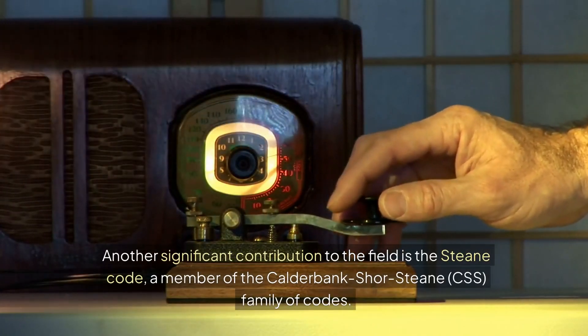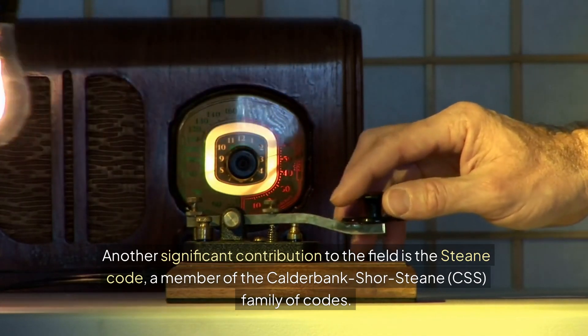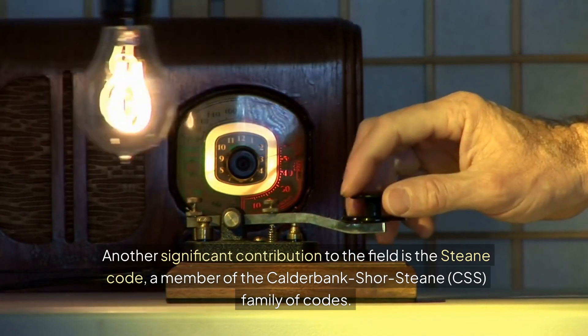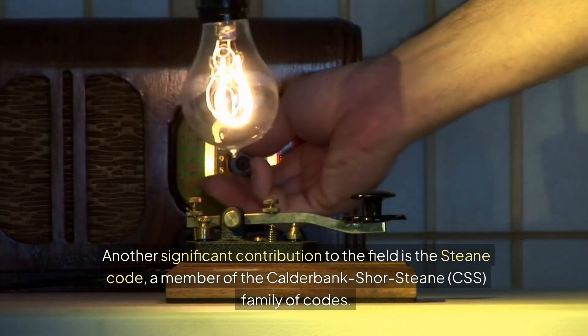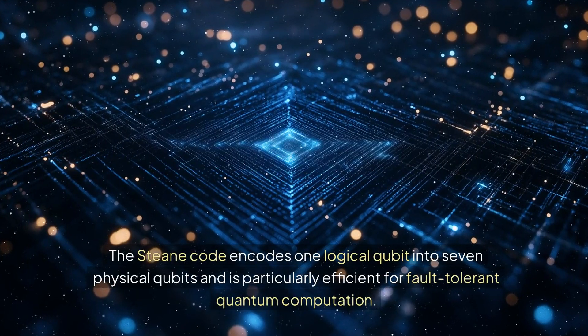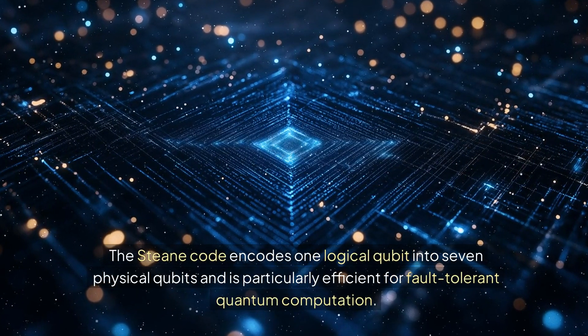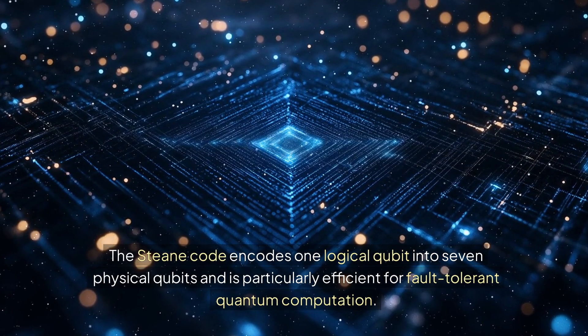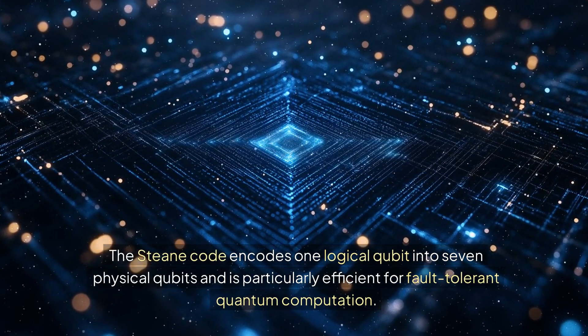Another significant contribution to the field is the Steen Code, a member of the Calderbank-Shore-Steen (CSS) family of codes. The Steen Code encodes one logical qubit into seven physical qubits, and is particularly efficient for fault-tolerant quantum computation.